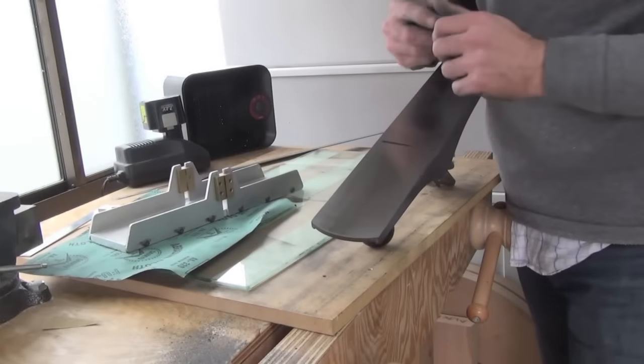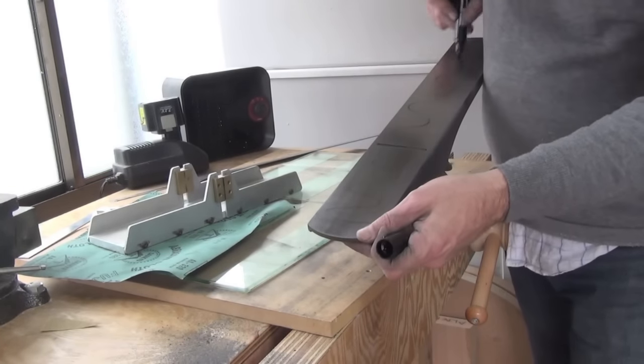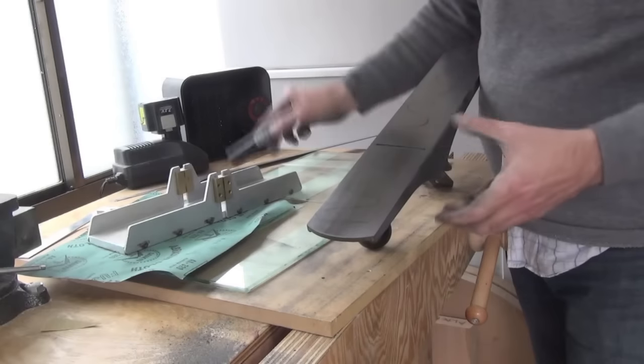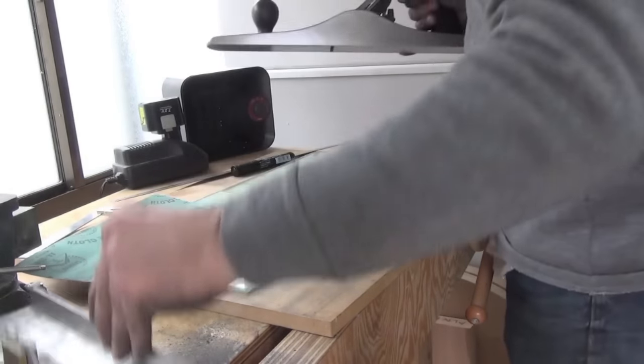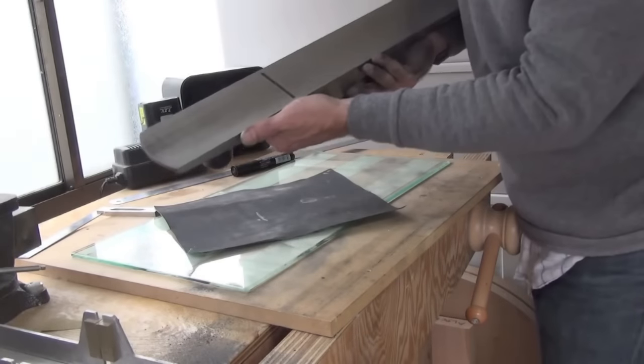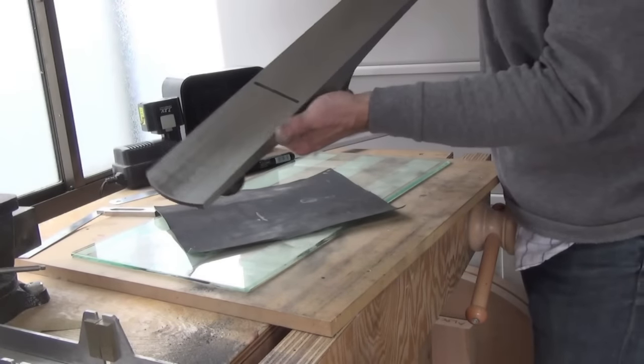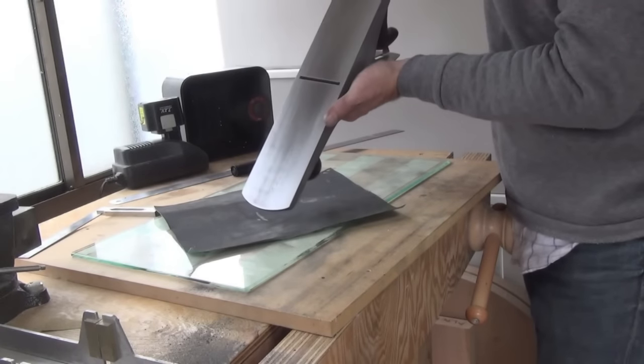Now one little technique you can use to test for flatness is simply to mark the bottom of the plane and then just give it a bit of sand. There's only a tiny little bit of marker remaining here, and it's come off evenly all over the sole.